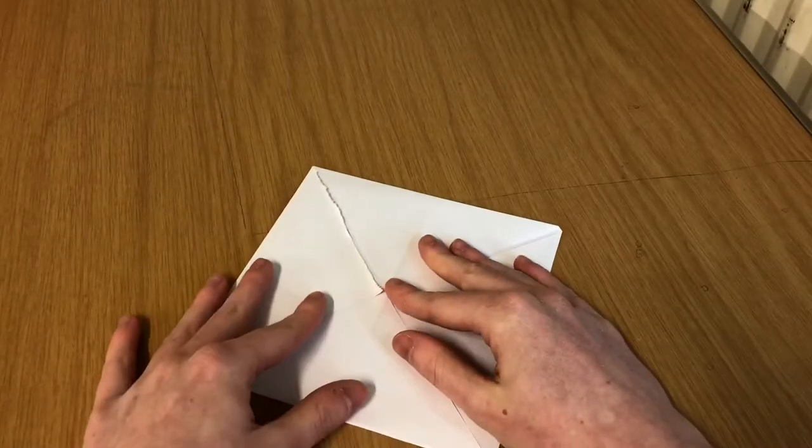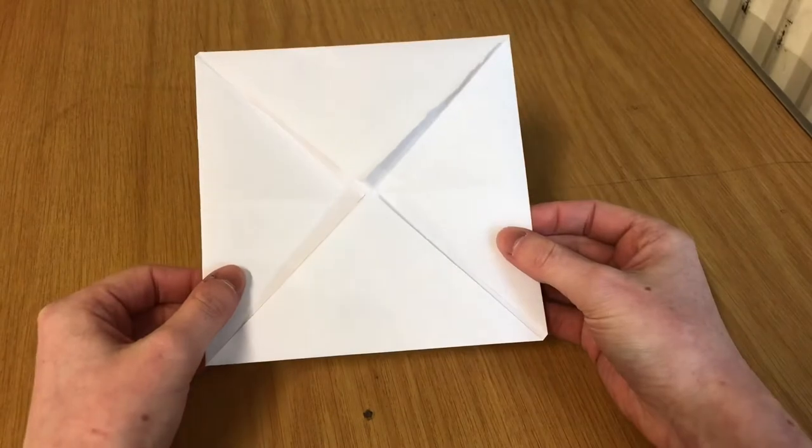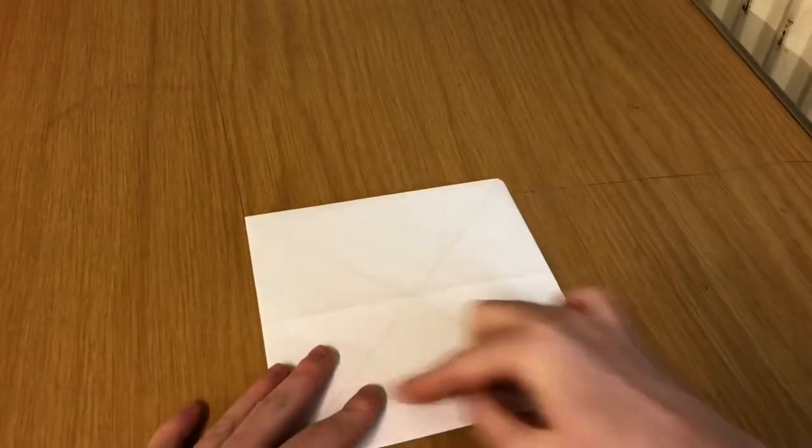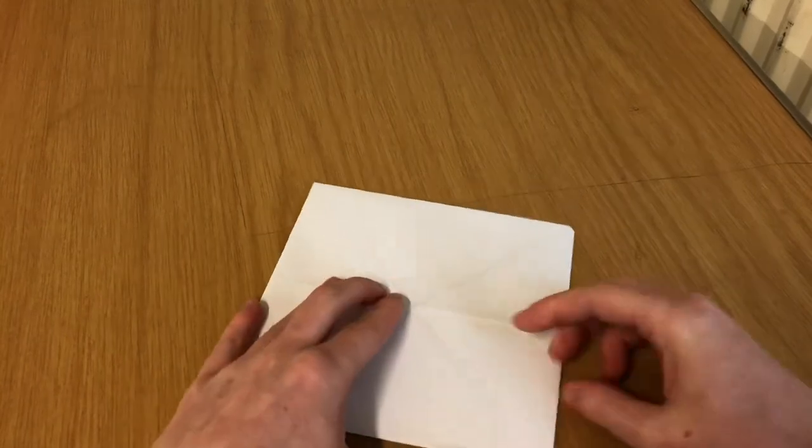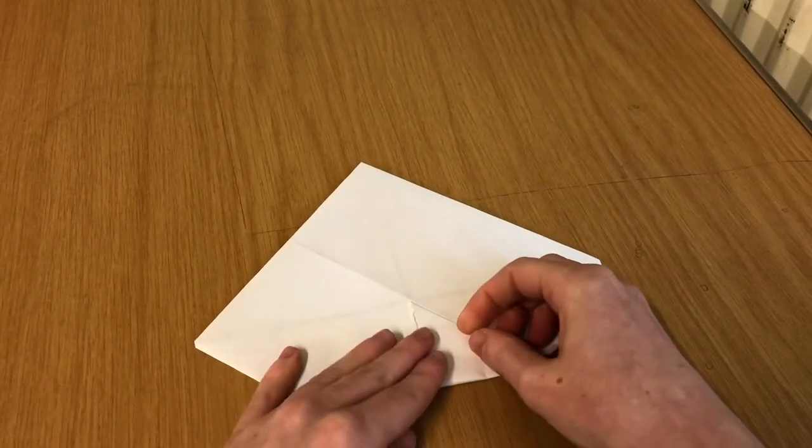Now you've made a smaller square. If you turn that square over so you've got the blank side with no folds on it, and starting again with the corners, fold them back into the middle on themselves.